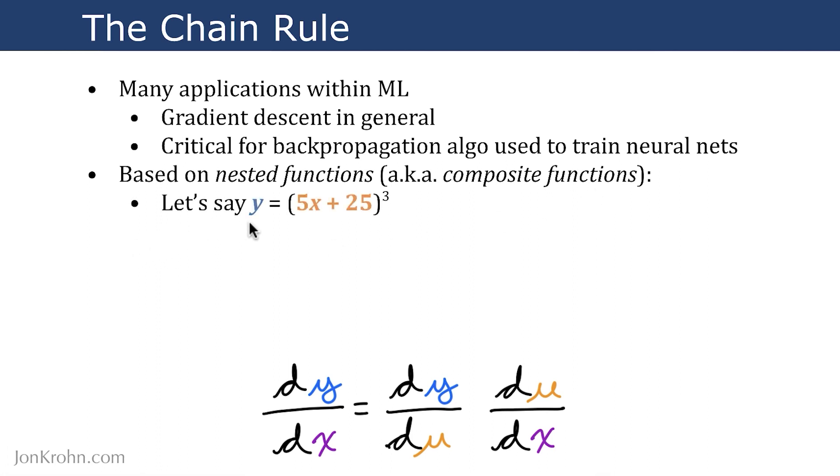So let's say that y equals (5x + 25)³. Well, we can break this up into two nested functions. So we can let the inner function be equal to some variable, let's say u. So this inner part within the brackets, let's call that u, 5x + 25.